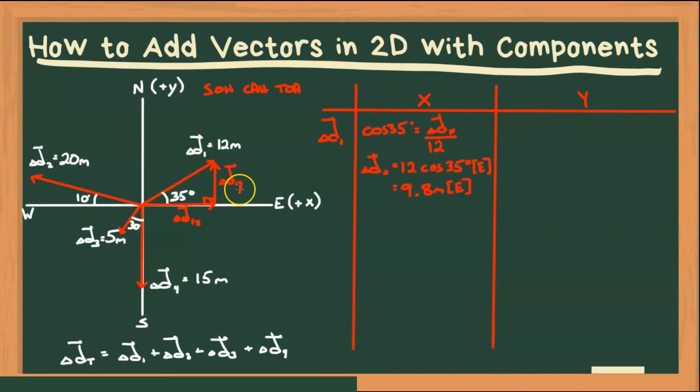Well, let's do the same thing for Y. Now, Y is opposite of our angle. So we're going to use sine. So the sine of 35 is going to equal to delta D1Y all over, again, the hypotenuse, which is 12. Multiply both sides by 12, and we get delta D1Y is going to equal to 12 sine 35 degrees.